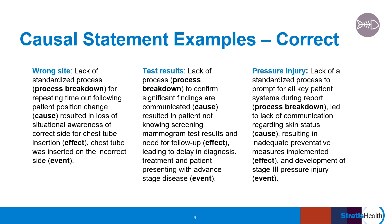Here are several examples of causal statements written correctly. They show the cause and effect relationship and help align the problem, the root cause, and the proposed actions to prevent recurrence. These examples describe the process breakdown — the cause and effect that led to an event. These examples do not assign blame to individuals, and they identify things that we can change in our processes and systems to prevent these errors from recurring.